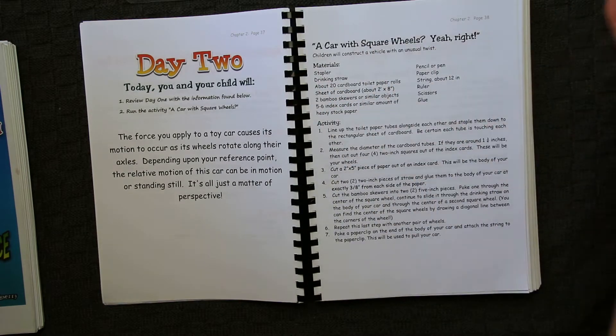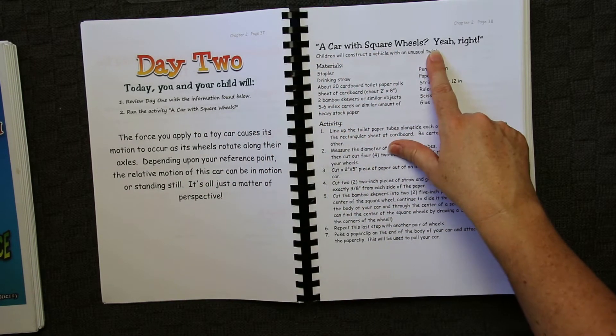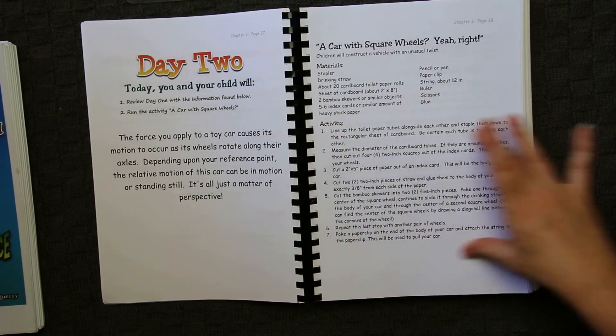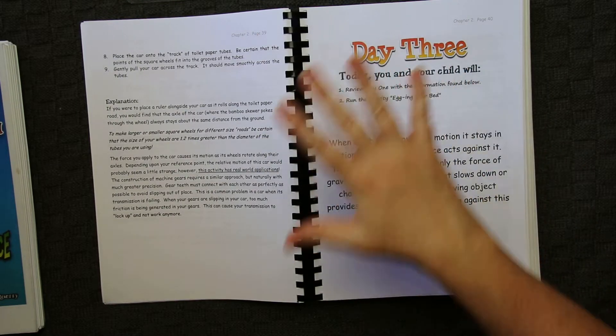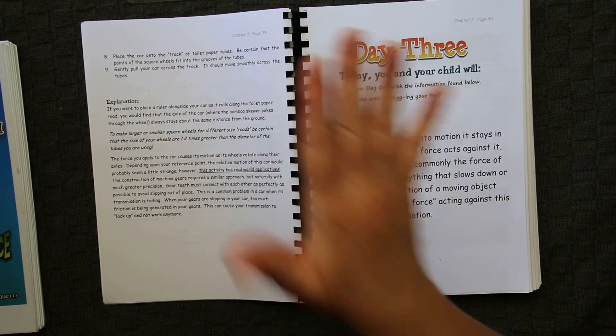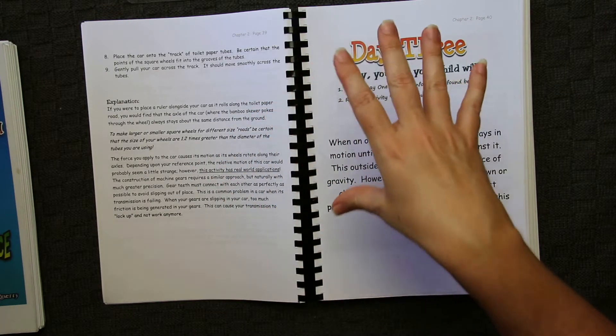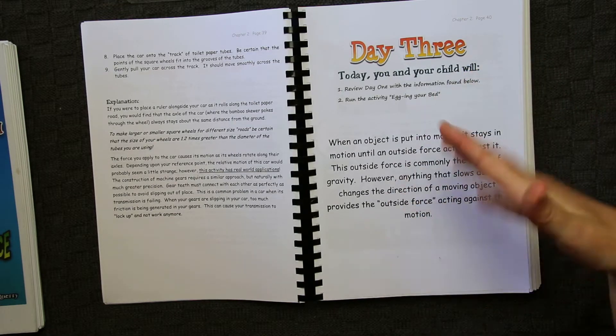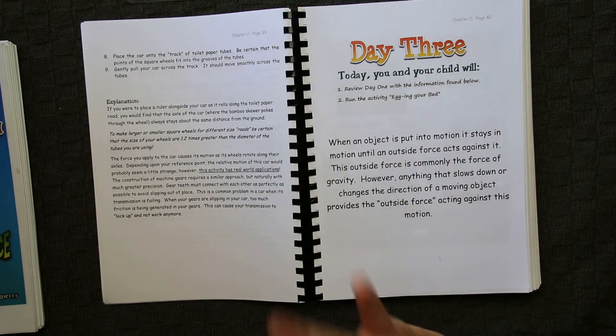And then the second day or whenever you choose to do it next, it explains to you what the hands-on demonstration is. So a car with square wheels. Yeah, right. Children will construct a vehicle with an unusual twist. Gives you all the materials, full step-by-step instructions. Now, my one negative with this program. At least half of the activities I personally feel would strongly benefit from photographic directions. So if Scott ever updated this, this is what I would be pushing for - photographic directions. Because sometimes we have been, and as you know, we do this with a group of people, so it's not just me, have been scratching our heads trying to figure out what the directions actually are telling us to do. Not every time, sometimes. So I think that's a negative.